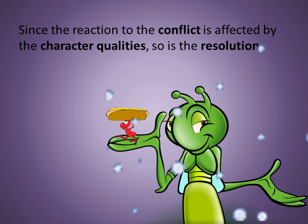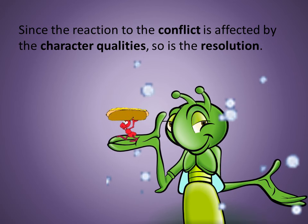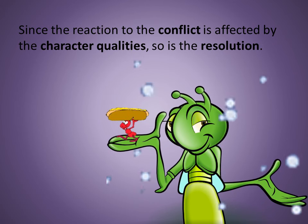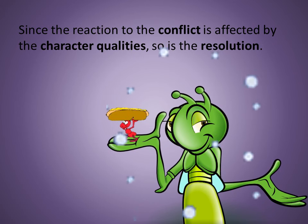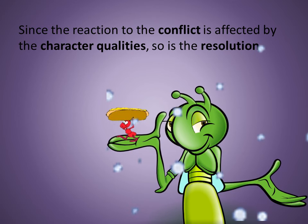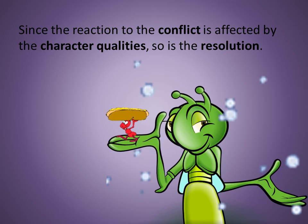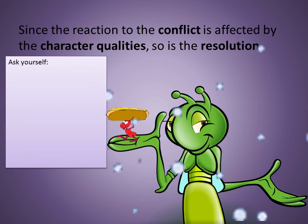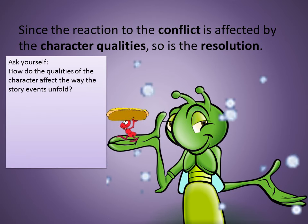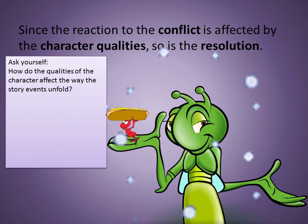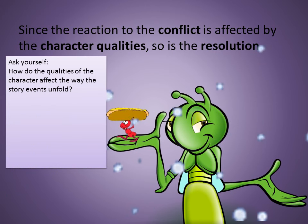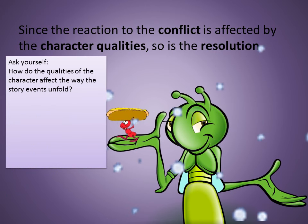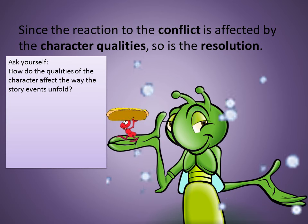Since the reaction to the conflict is directly affected by the character's qualities, so is the resolution, or the outcome, of the story. How are you going to notice this? You should ask yourself: how do the qualities of the character affect the way the story's events unfold?